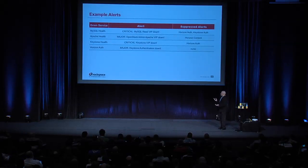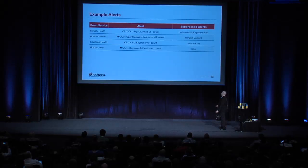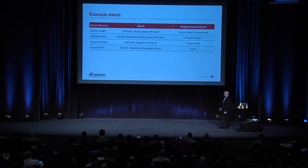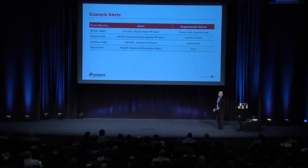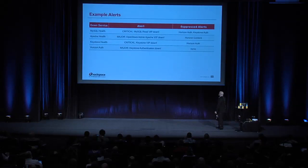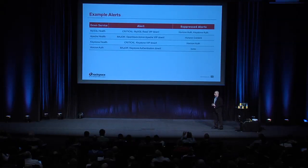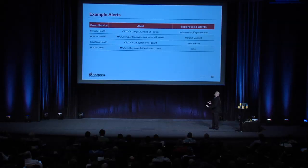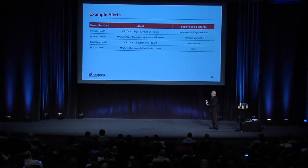Walking through failure states: if MySQL fails, you see a critical alert — MySQL read VIP down — and we suppress the Horizon auth and Keystone auth alerts. If Apache fails, Horizon content gets suppressed and you get an error that your OpenStack admin Apache server is down. If Keystone fails, we suppress Horizon auth alerts and tell you the Keystone VIP is down. The criticality and messages will vary depending on your system.